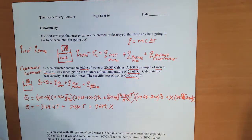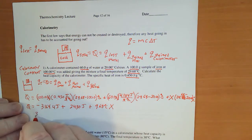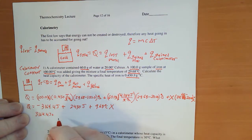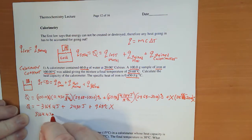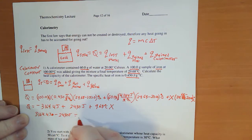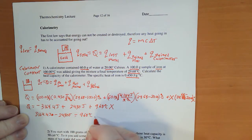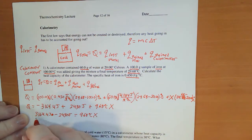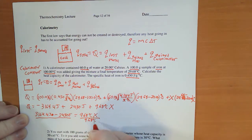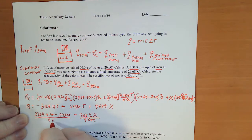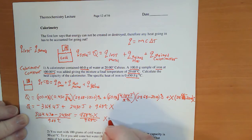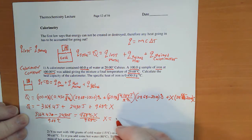Group like terms, I'm going to say 3164.4 joules, actually this is going to be minus 2430 joules, equals 9.68 degrees Celsius x. I can divide both sides by 9.68 degrees Celsius. That cancels, and x is going to equal 75.9...